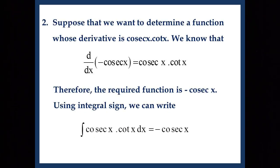Using the integral sign we can write ∫cosec x · cot x dx = −cosec x. Please do not read this as 'integral cosec x cot x into dx' — we are not supposed to multiply by dx. dx tells us that the variable of integration is x. Similarly, ∫cosec y · cot y dy = −cosec y, because here the variable of integration is y, so we use dy.